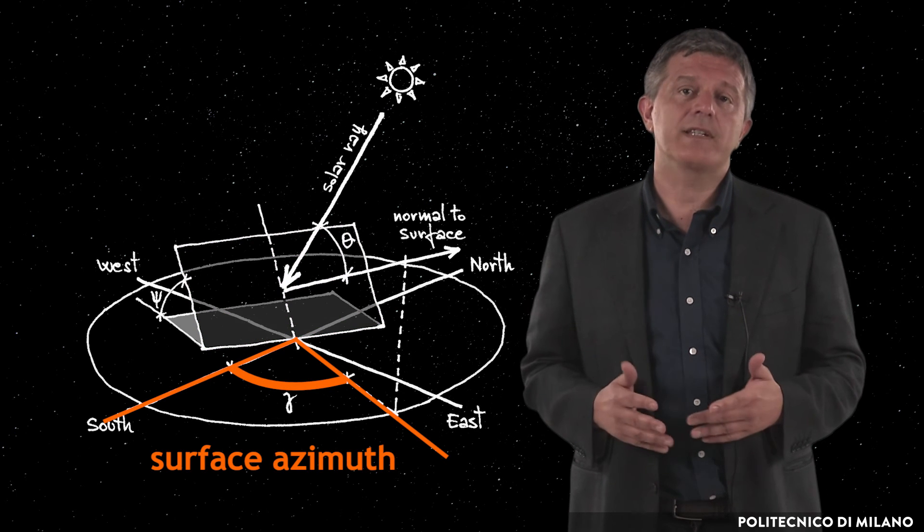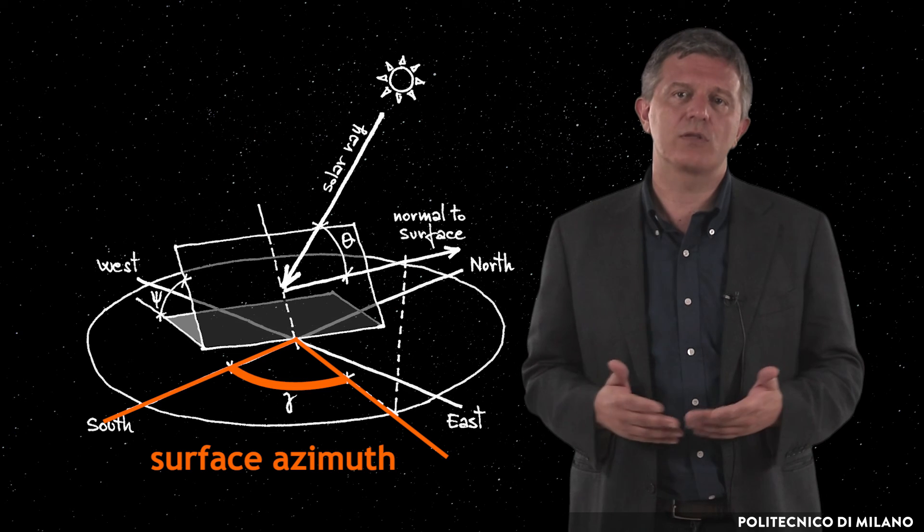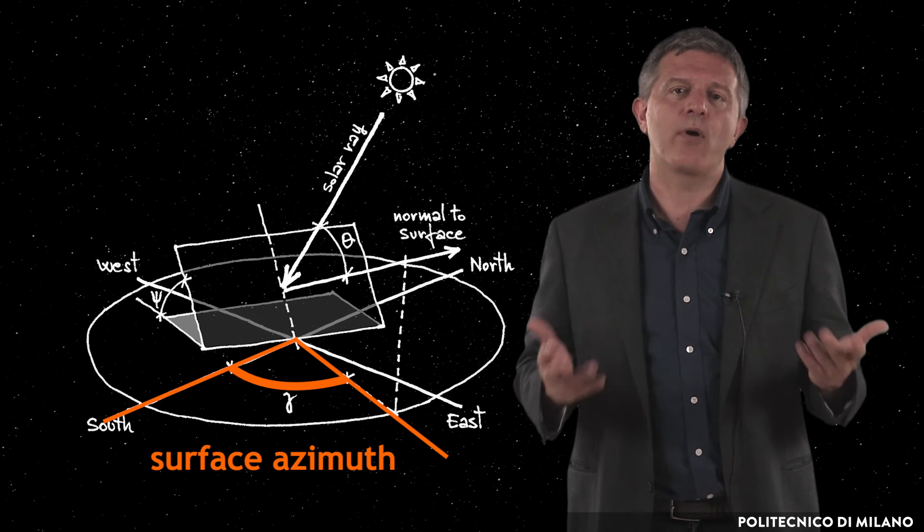Gamma, surface azimuth, is the angle between the horizontal projection of the normal to the surface with the south pointing axis.